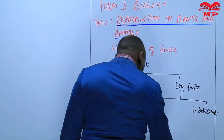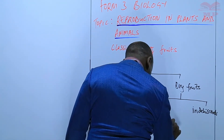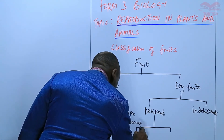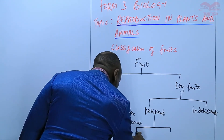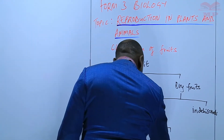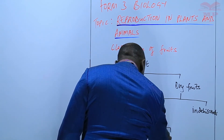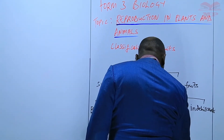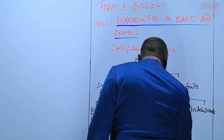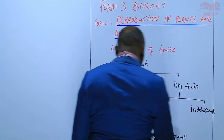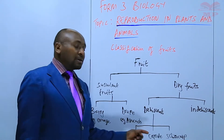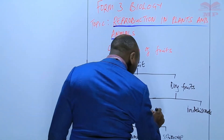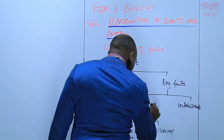The dehiscent fruits are further divided into three parts. We have the legume, for example a bean. Then we have the capsule. And then we have what we call the schizocarp. Those three are examples of fruits that split open when they mature — that is what is called dehiscence.